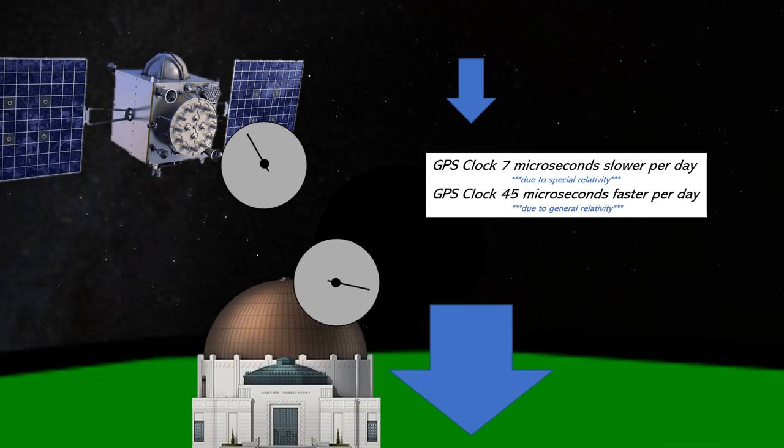The net effect, then, of special and general relativity is that the clock on the satellite will be 38 microseconds faster than ours on the ground after a full day.